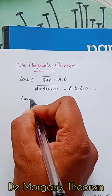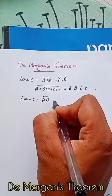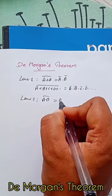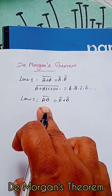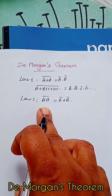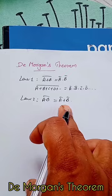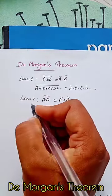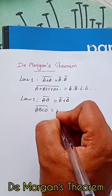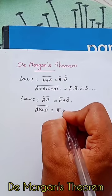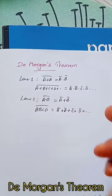Law 2: (ab) bar is equal to a bar plus b bar. That is, the complement of the product of variables is equal to the sum of their individual complements. Similarly, (abcd) bar is equal to a bar plus b bar plus c bar plus d bar plus etc.